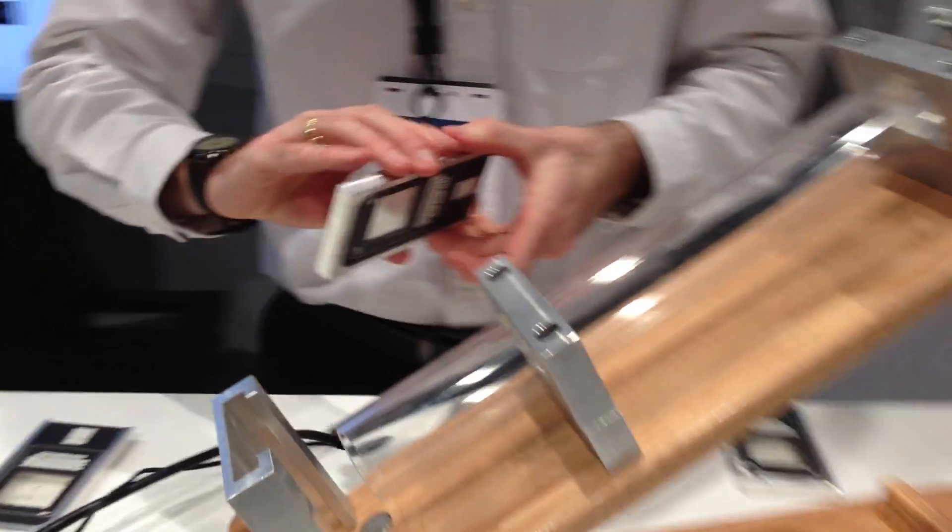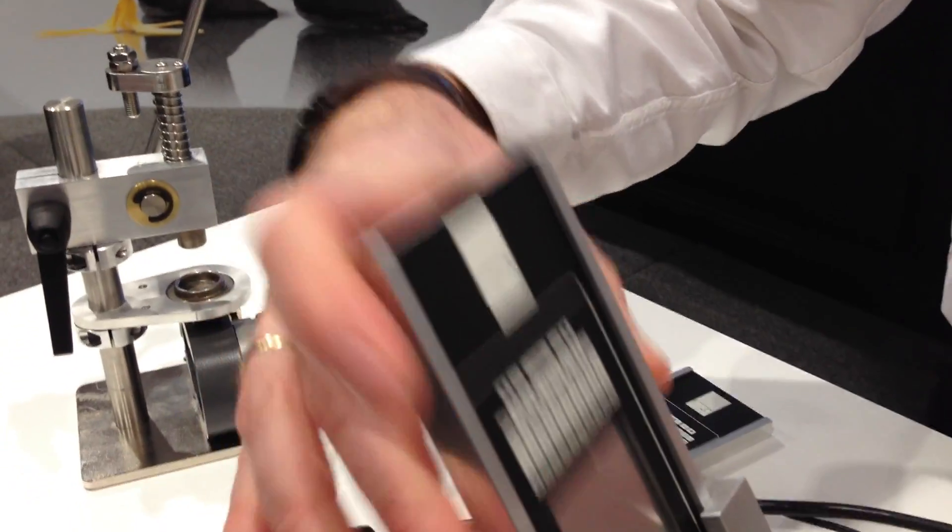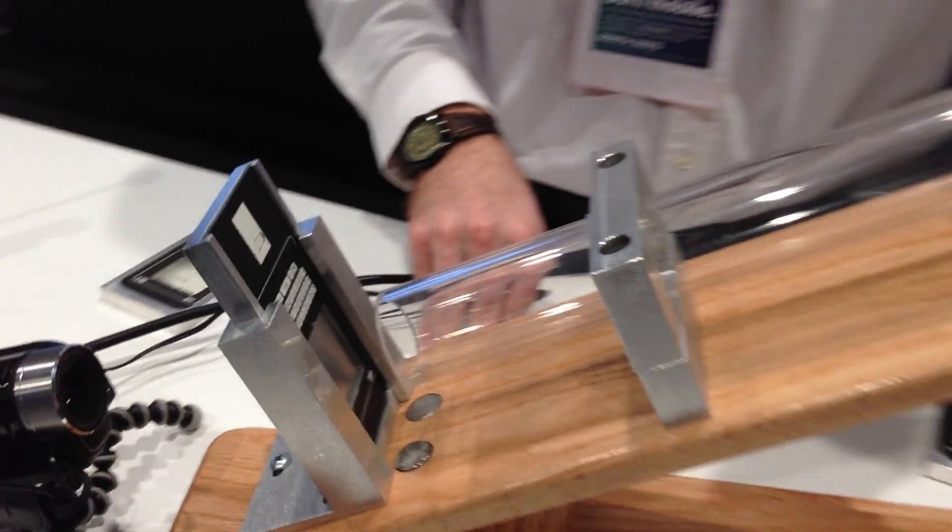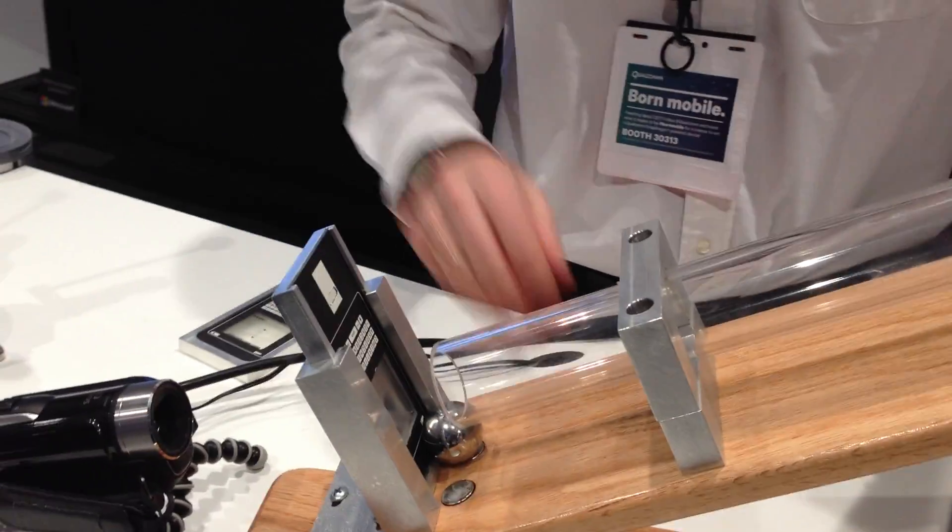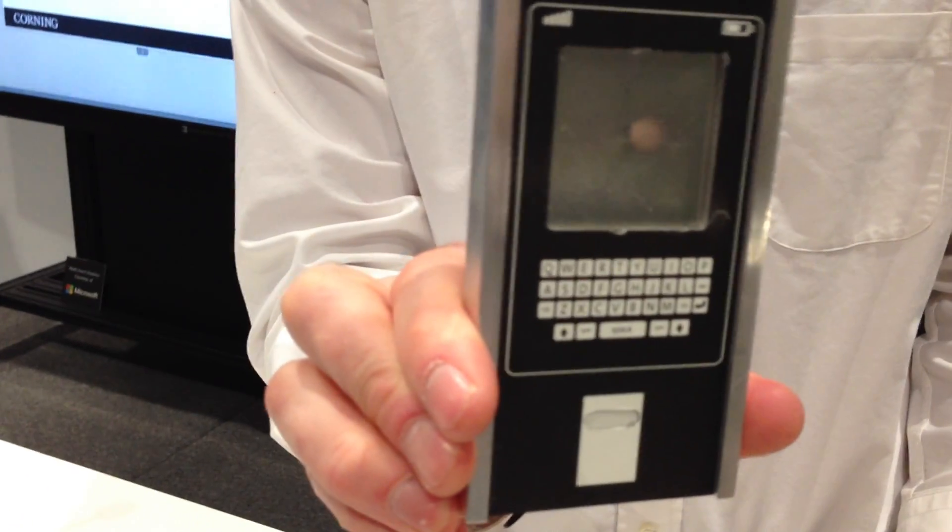Just to show the amount of energy that's here, we have an aluminum plate that's the same thickness as the glass. This is to demonstrate the amount of energy we're imparting into the glass. You can see that puts a really nice dent in the aluminum sheet.